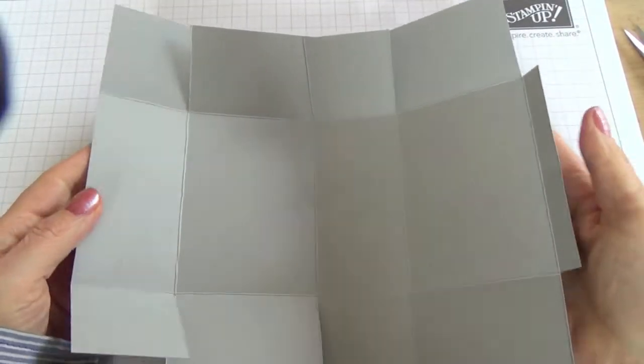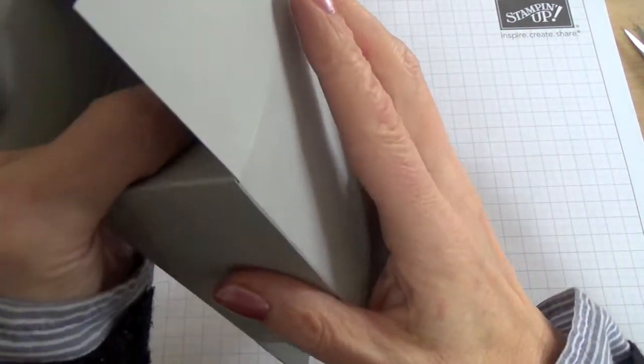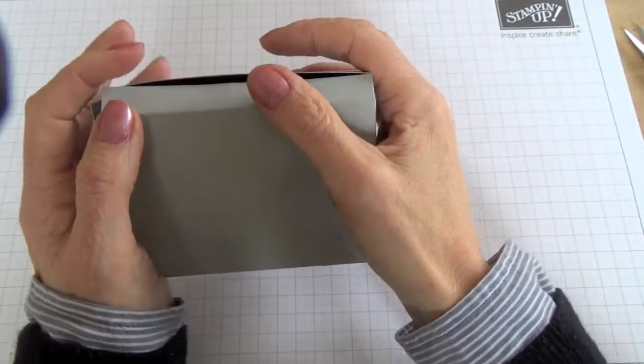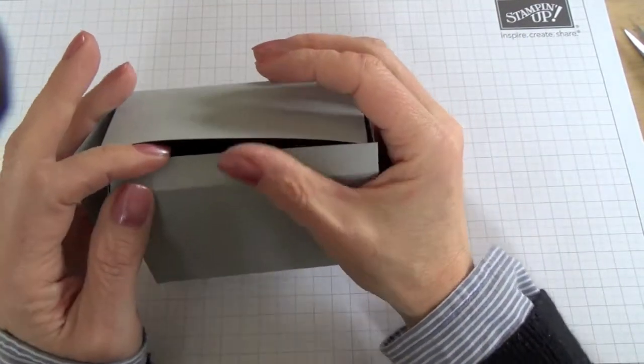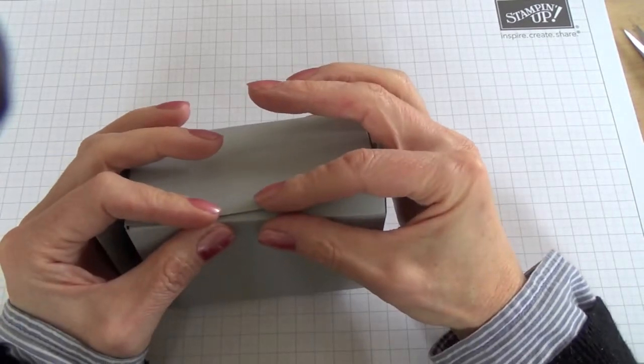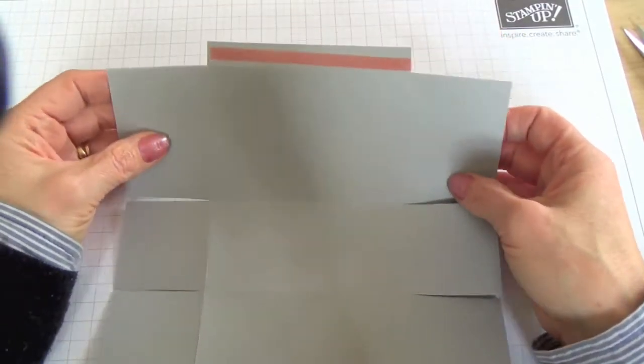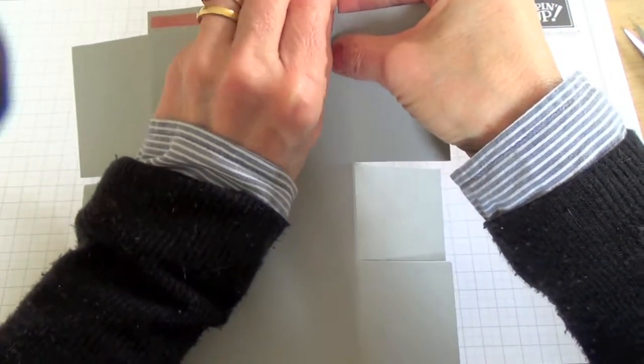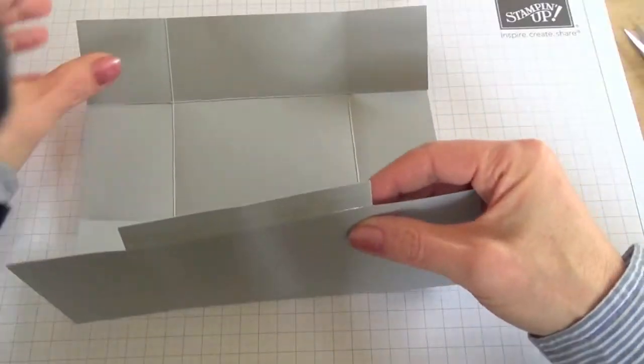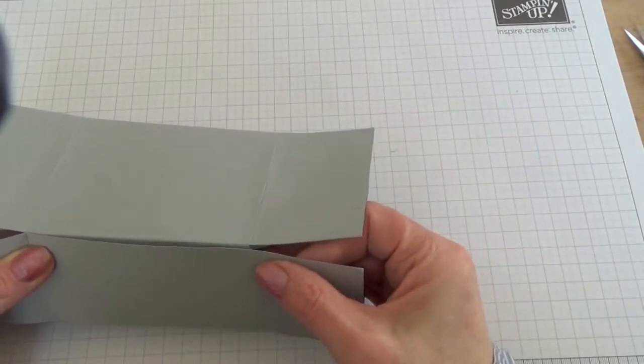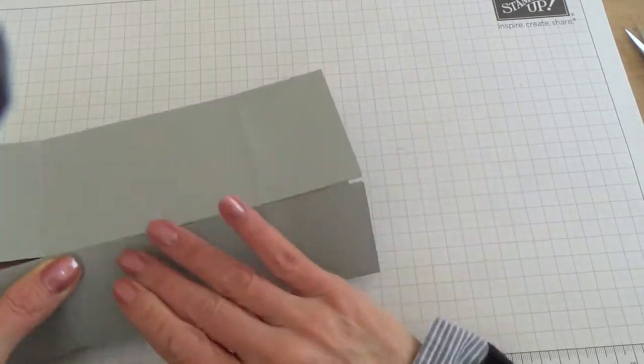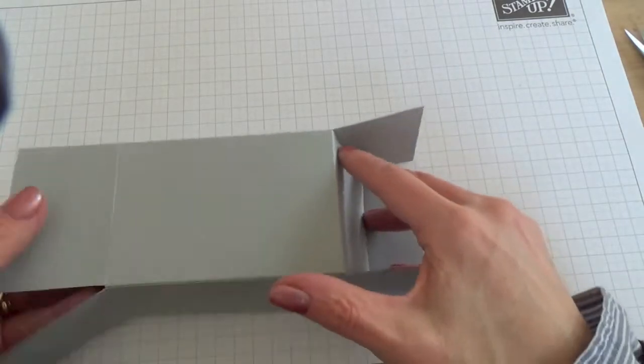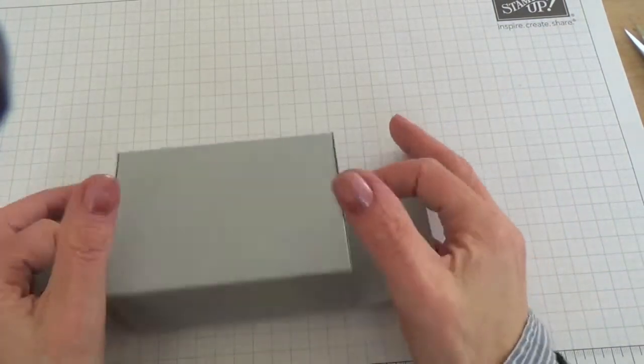Now you have something that will fold into a box. I'm going to fasten that with sticky strip so that it won't spring apart. Here you can see that I've put the sticky strip along that little narrow tab and I'm going to peel that off, and then you've got your box all ready.